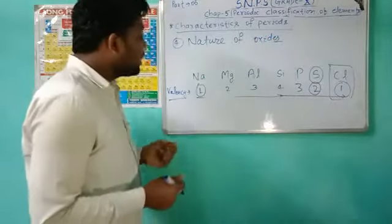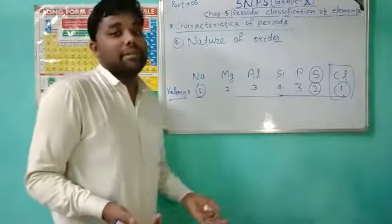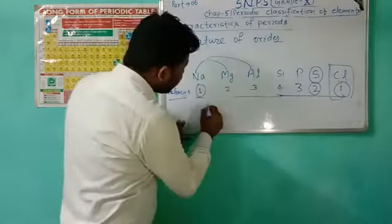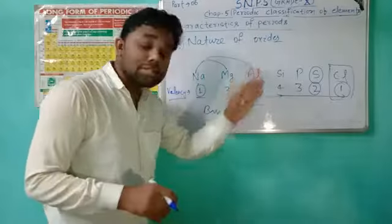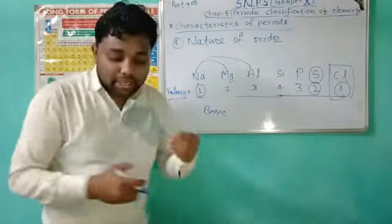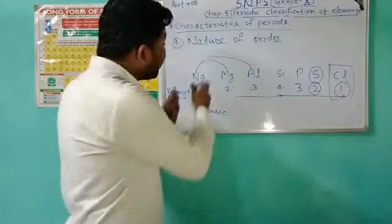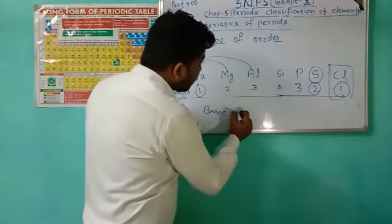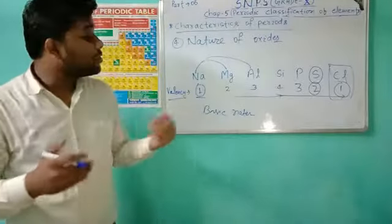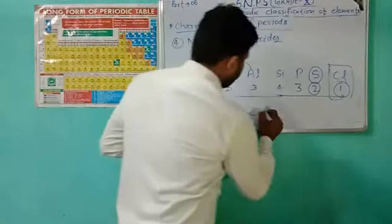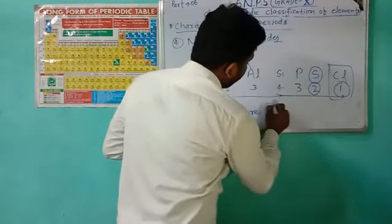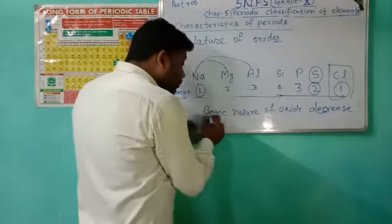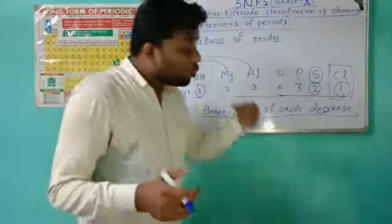When we talk about the nature of oxides: sodium is an alkali metal, and metallic oxides are basic in nature. So the oxides of sodium, magnesium, and aluminium are basic. Sodium oxide is more reactive than magnesium oxide, and magnesium oxide is more reactive than aluminium oxide. So the basic nature of oxides decreases going left to right.